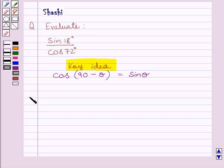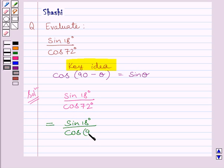Now let us start the solution. We have to find sin 18 degrees upon cos 72 degrees. Now we know 72 degrees and 18 degrees are complementary angles. So, we can write sin 18 degrees upon cos 72 degrees is equal to sin 18 degrees upon cos 90 minus 18 degrees. We can write 72 degrees as 90 degrees minus 18 degrees.